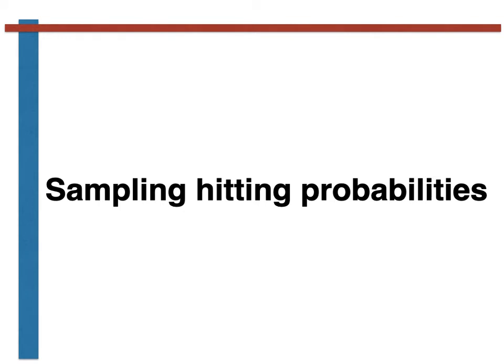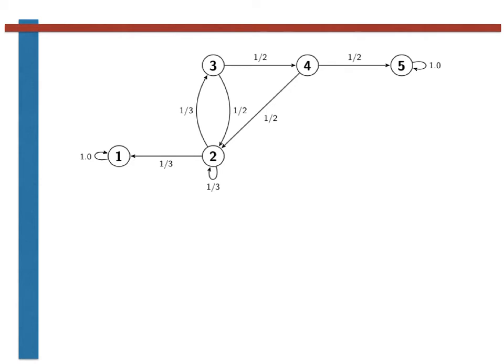Before getting onto the programming, let's first clarify what we are doing in this exercise. We know that if we run this chain we will eventually arrive in either state 1 or state 5, as these states are recurrent and absorbing.